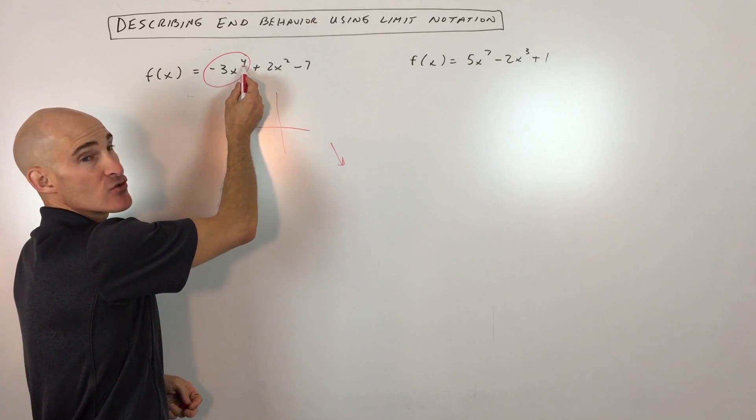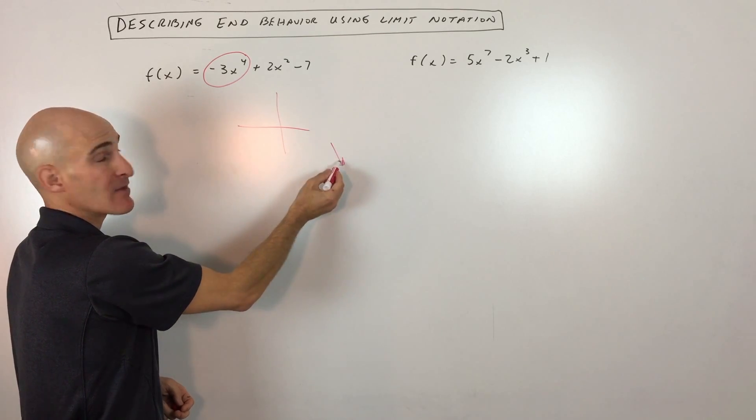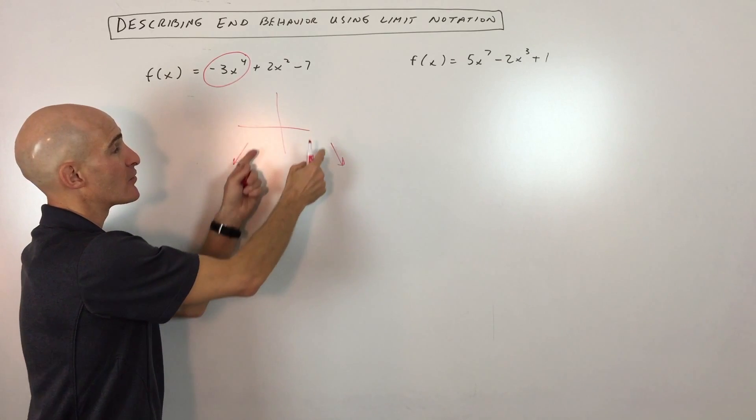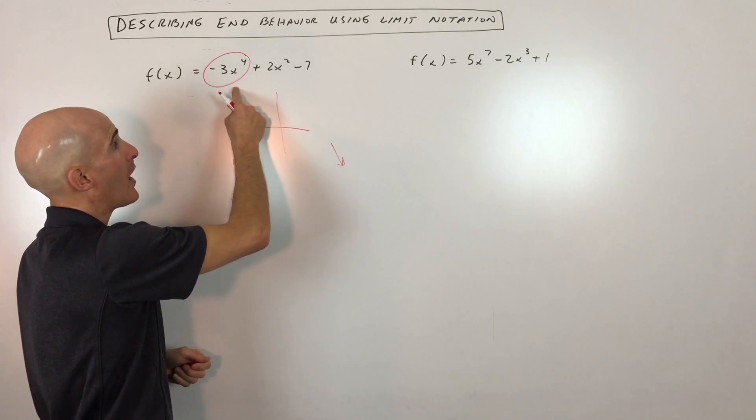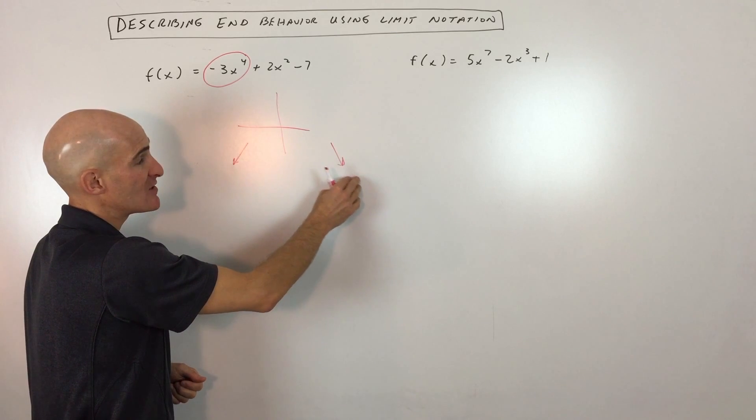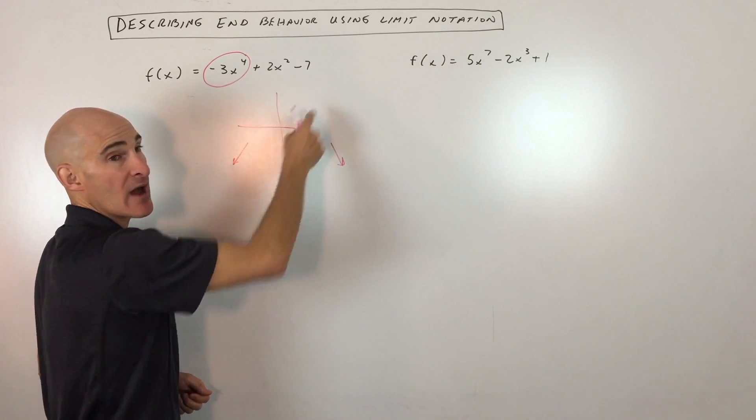Now because this is an even degree, when we go to the left, it's also going to have the same end behavior as the right. So it's going to go down towards negative infinity. So when it's even, they're either going to both go down or both go up. But the leading coefficient, if it's negative, that tells you about the right end behavior. Negative means it's going down to negative infinity. If this is positive, it would tell you it's going up to positive infinity.